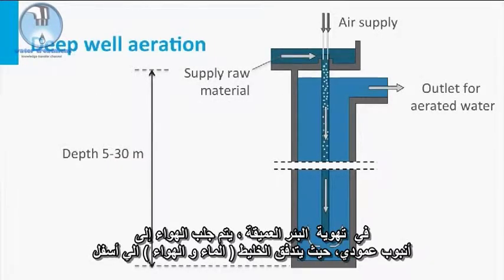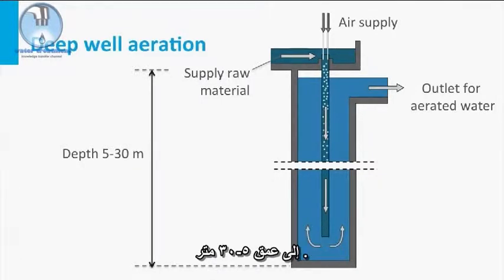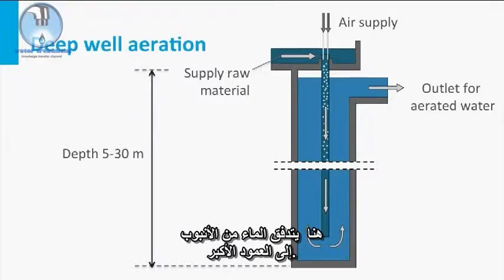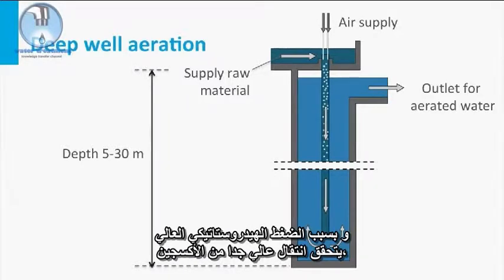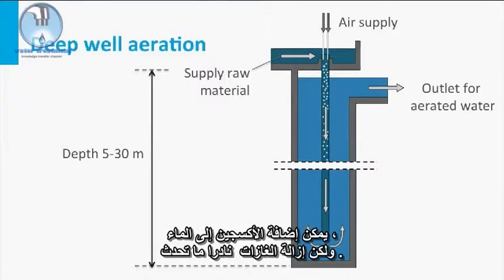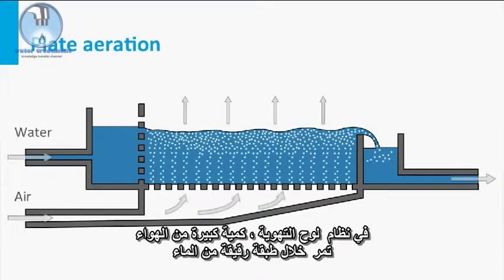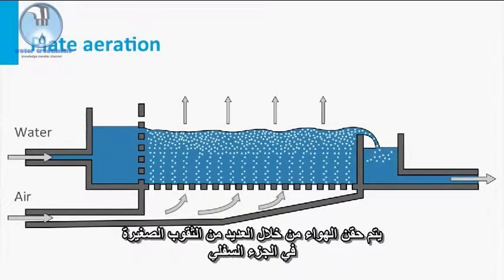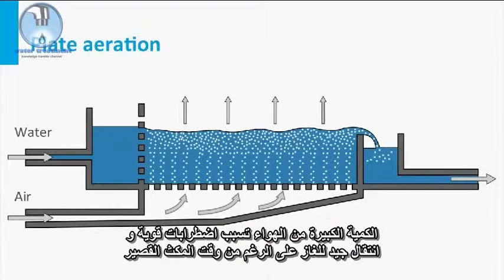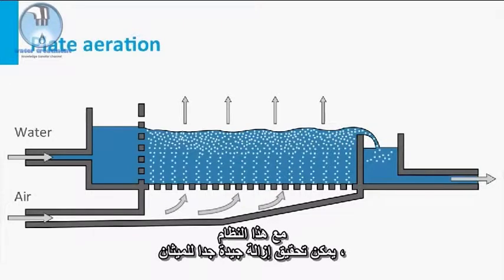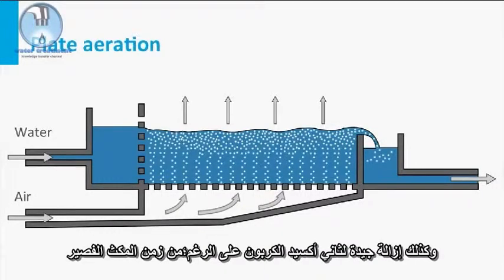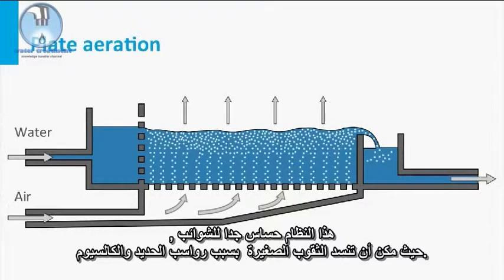For deep well aeration, air is brought into a vertical tube where the mixture flows down to a depth of 5 to 30 meters. Here, the water flows out of the tube into a larger shaft. Because of the high hydrostatic pressure, a very high transfer of oxygen is achieved within an exceptionally small space. Oxygen can be added to the water, but gas removal rarely occurs. With plate aeration, a large amount of air is blown through a thin layer of water; the air is injected through many small holes in the bottom. The large amount of air causes strong turbulence and good gas transfer, despite the short residence time. With this system, a very good methane removal can be achieved, and also considerable carbon dioxide removal. The system is very sensitive to fouling, though, as the small holes can clog due to iron and calcium deposits.